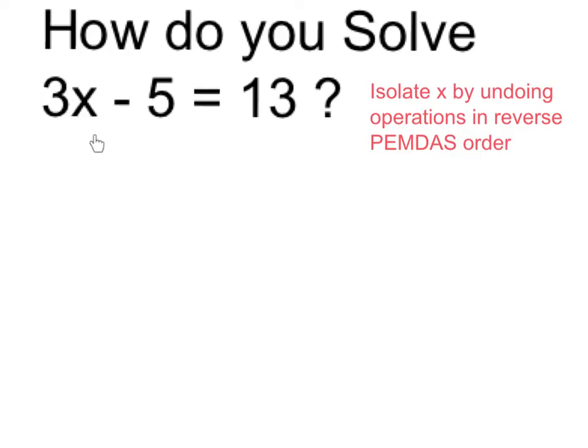Solving this equation means we want to find the value of x which makes it true. So I need to undo what has been done to x to get x by itself.